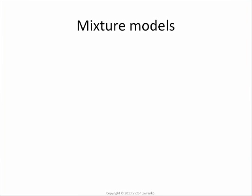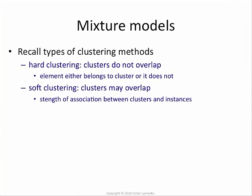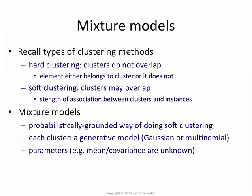We'll talk about mixture models and the expectation maximization algorithm. One way to think of mixture models is in relation to clustering methods. Remember we had classification of different clustering methods — some of them have hard boundaries, so an element either goes into a cluster or doesn't. Some clustering methods are soft, where an element belongs to multiple clusters simultaneously but with different degrees of belief, say 60% confidence in cluster 1 and 40% in cluster 2. Mixture models are a probabilistically sound way of doing soft clustering.